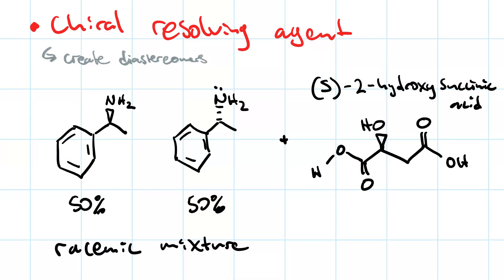Well, the amine is a base. It's going to take the most acidic proton. And that'll create an ammonium cation and an S-2-hydroxy-succinate. But now we'll have two chirality centers.